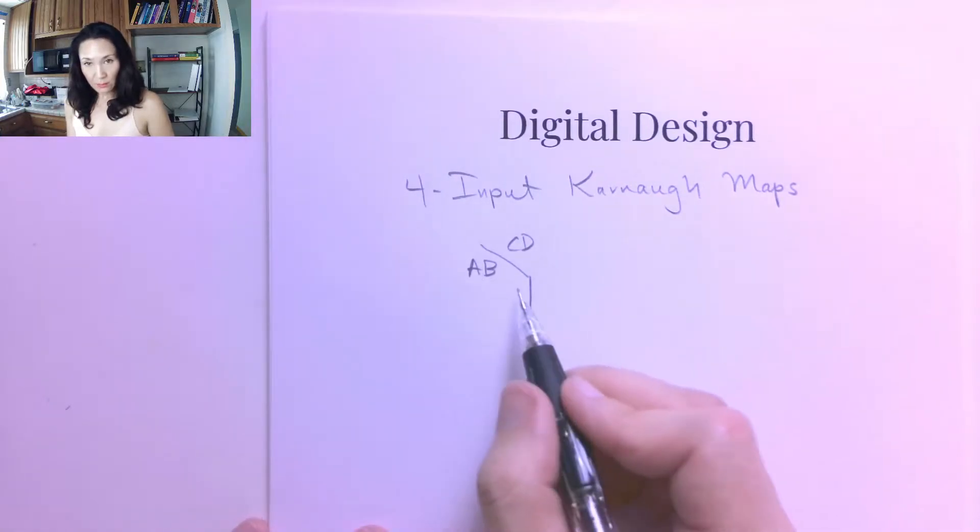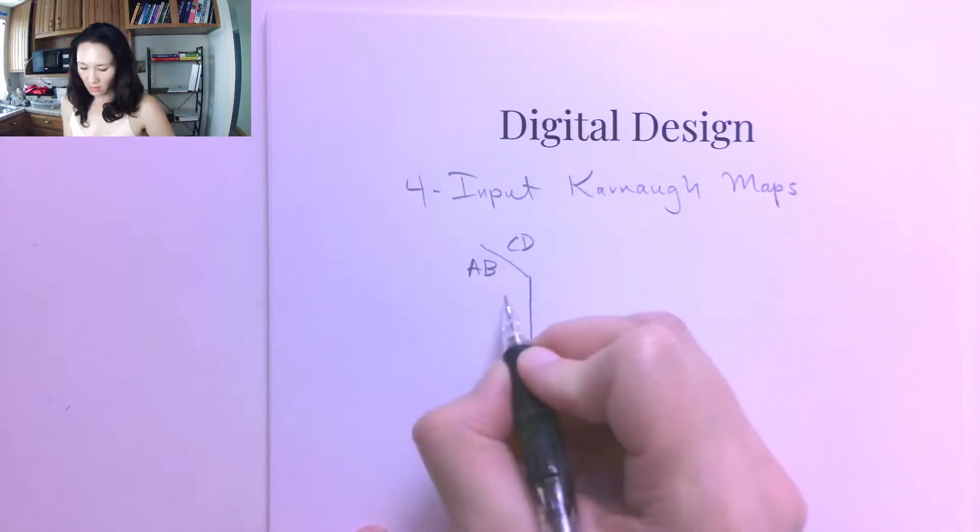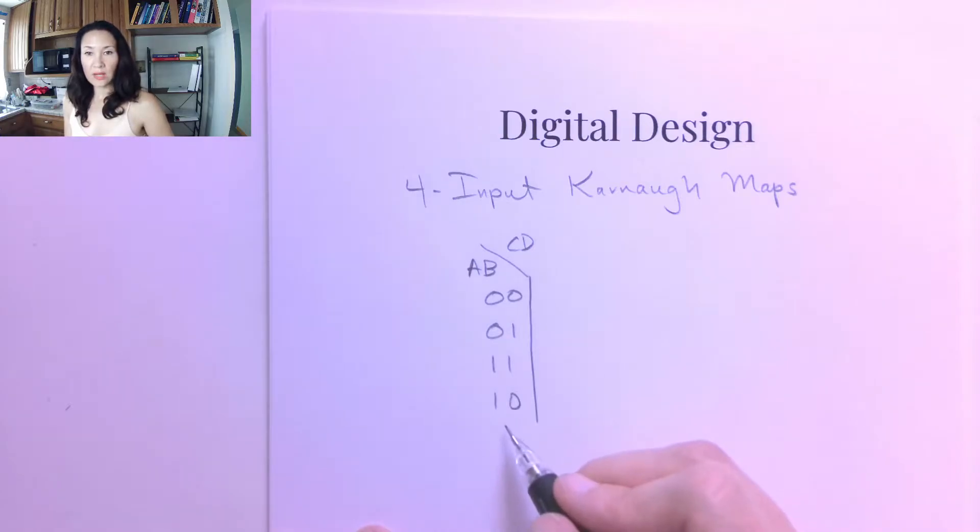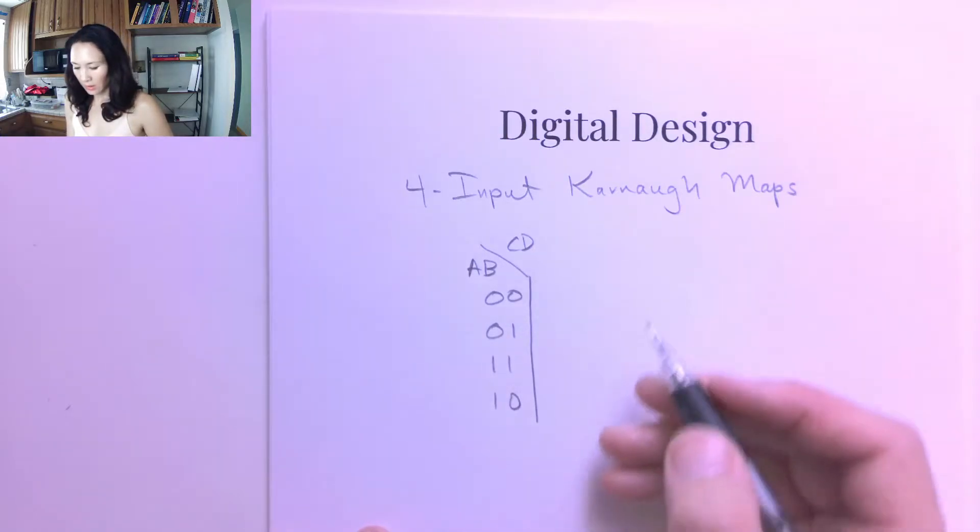Now the input combinations for A and B are 0, 0, 0, 1, 1, 1, and 1, 0. So I counted here in gray code, so I have only one bit change between each number iteration.